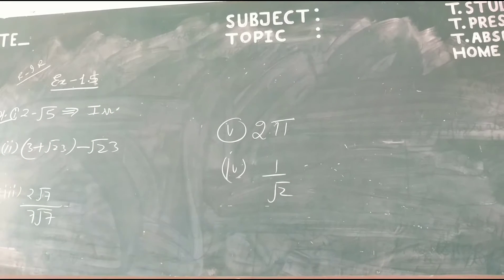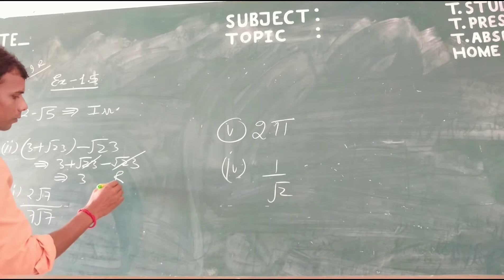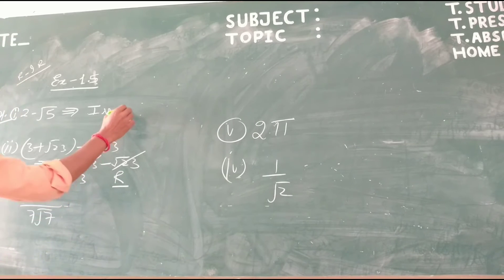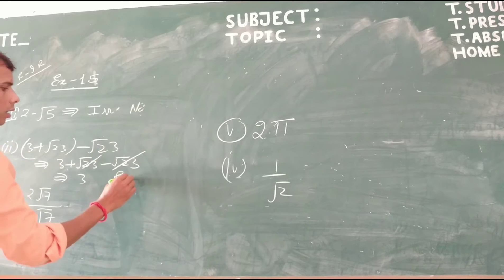Second part is 3 plus root 23 minus root 23. To simplify, this is 3 plus open bracket root 23 minus root 23. Root 23 and root 23 cancel, we get 3. This number is a rational number.